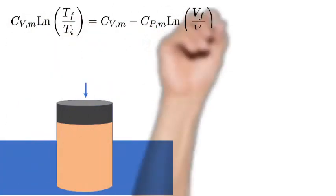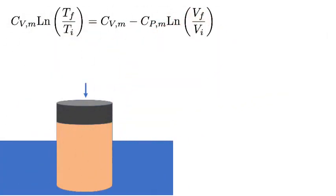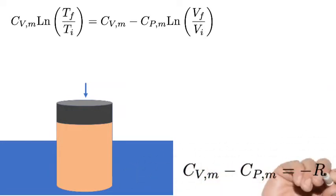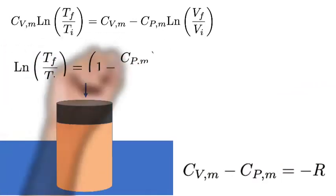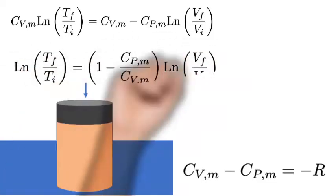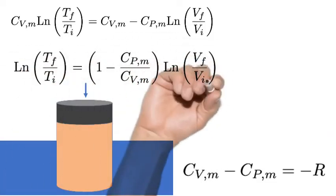We can actually rewrite this equation without the gas constant using a relationship between the constant volume and constant pressure heat capacities. For reasons which will hopefully soon become clearer, I'm going to divide both sides by the constant volume heat capacity.